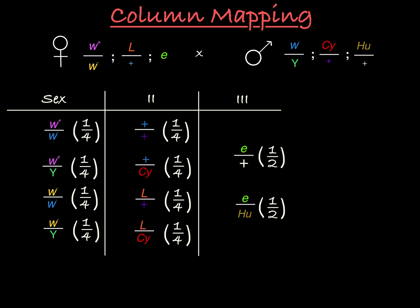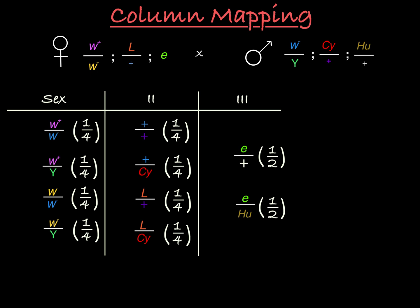As you can see, column mapping gives you an alternative way to look at all possible offspring genotype options when considering a cross with parents with complex multi-chromosome genotypes. If you want to learn more, check out my video on column mapping when considering linked genes and recombination.